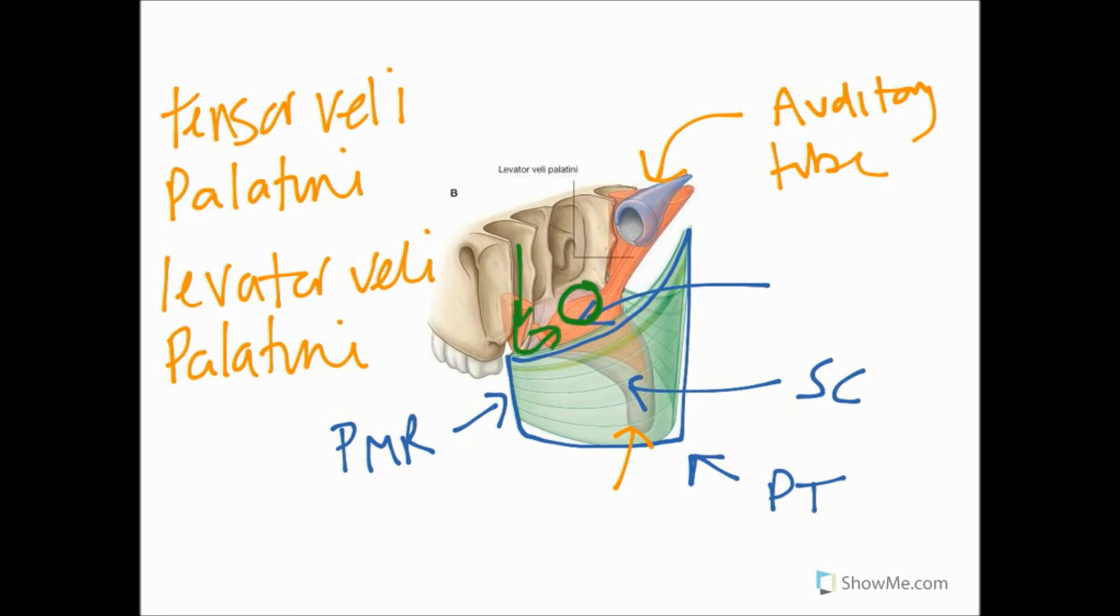The tensor changes direction: it comes down vertically between the lateral and medial pterygoid plates, then hooks around the pterygoid hamulus and flattens out as an aponeurosis on either side. The one that's slightly more vertical is the levator veli palatini. This comes from the petrous part of the temporal bone, just anterior to the opening of the carotid canal. It comes down slightly more vertically and doesn't run between the pterygoid plates as the tensor does.